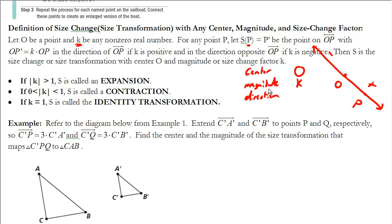Let's talk a bit more about the magnitude piece. The magnitude is basically how much bigger or smaller the figure is going to get. If the absolute value of k is greater than 1 — either greater than 1 or less than negative 1 — my figure is going to get bigger; it's going to have an expansion. If k is between 0 and 1, I'm going to have a contraction and my figure gets smaller. The negative just determines the direction. And if k equals 1, I have an identity transformation — it's not going to change at all.